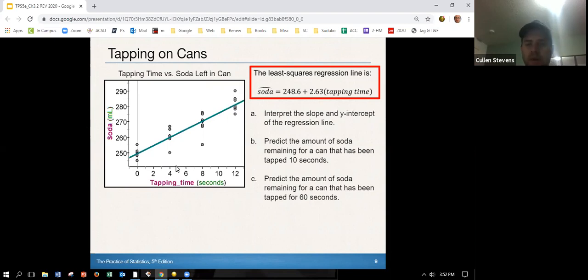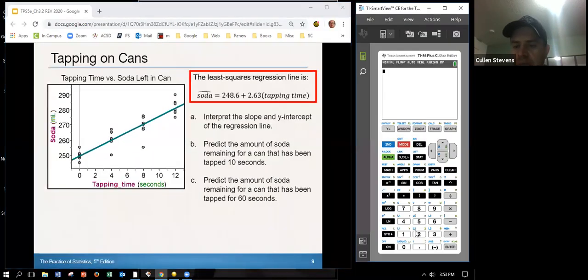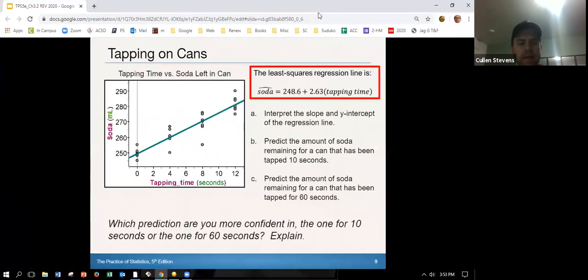Predict the amount of soda remaining for a can that has been tapped for 10 seconds. All right, so I'm going to take this 248.6 plus 2.63, and now my tapping time is 10 seconds. And I'm going to see that's about, I predict it's 274.9 milliliters. Now predict the amount of soda remaining for a can that has been tapped for 60 seconds. Well, that's interesting. That's off our graph. Let's take a look here. We're going to change this to 60. And that's about 406.4. So that means if you tapped it for more than a minute, there's a lot more soda in there. And maybe what we might find out, if you're a little tricky with your math here, there might have been more soda left in the can than what we started with. So I think that's a little bit dangerous here that we went all the way out to 60.